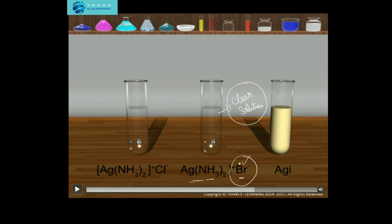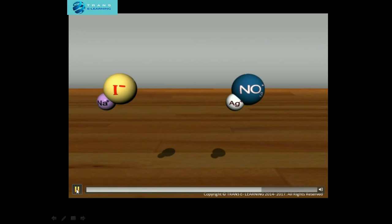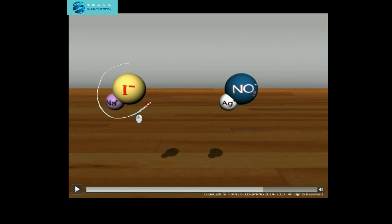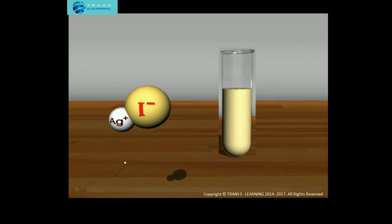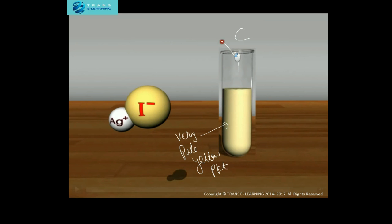Now zooming into test tube C, we see one molecule of sodium iodide and one molecule of silver nitrate, which on combining form silver iodide — a very pale yellow precipitate. This is what we saw inside test tube C at the surface level, resulting from the formation of silver iodide at the atomic level, detecting the presence of iodide ion.